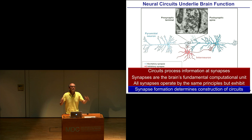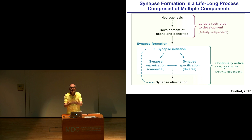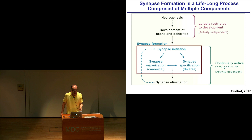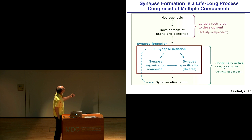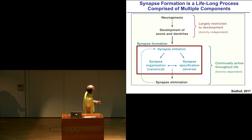In other words, a neural circuit is functionally built of the connections — where these connections are, how many there are — and equally importantly, of the properties of these connections, especially the plasticity of synaptic connections. We call the overall process that determines where synapses form and what properties they have 'synapse formation.' Conceptually, synapse formation is divided into the initiation of the synaptic contact, the organization of its canonical components, and the specification of its diverse properties.